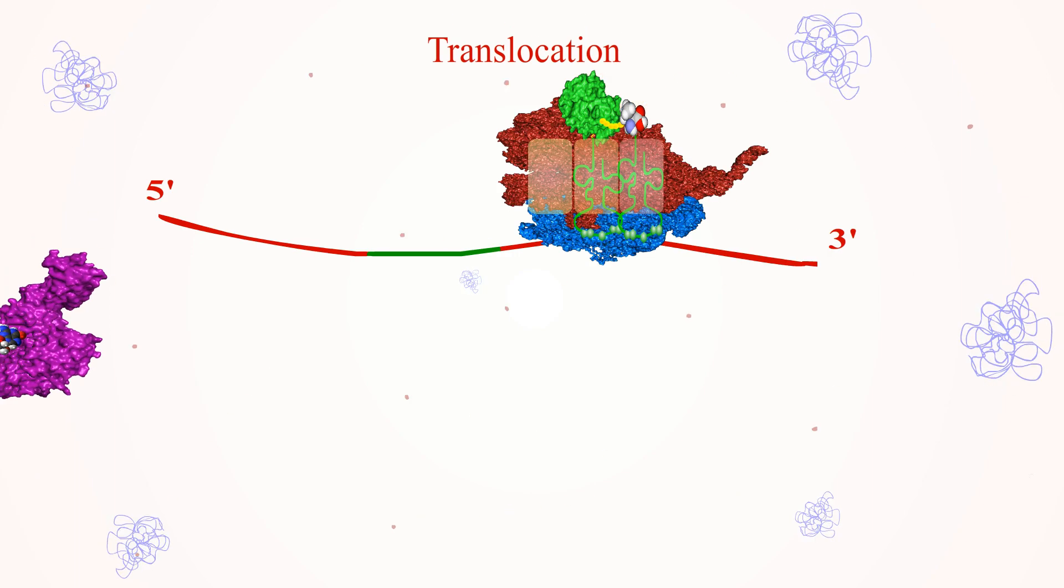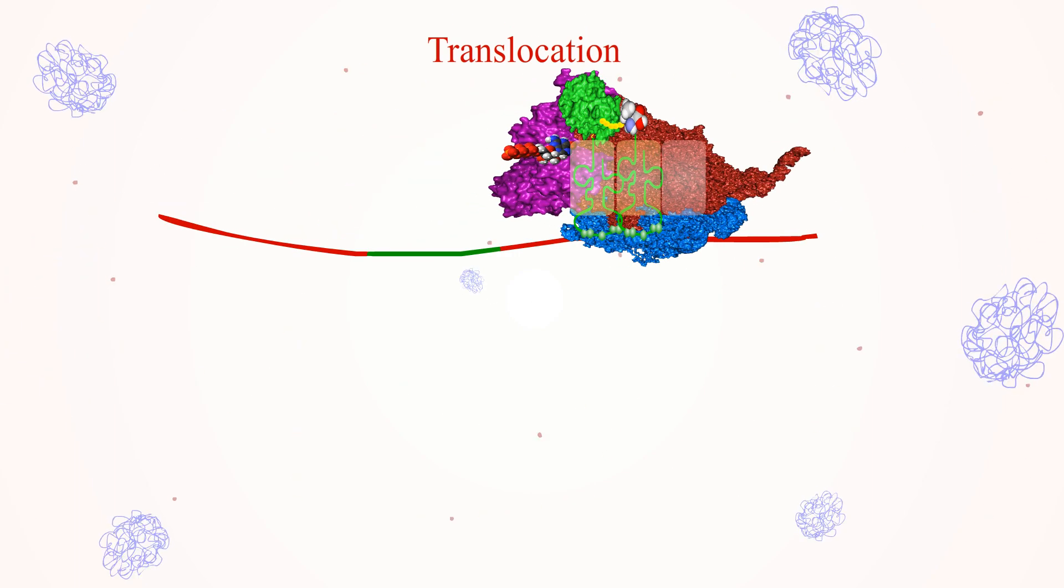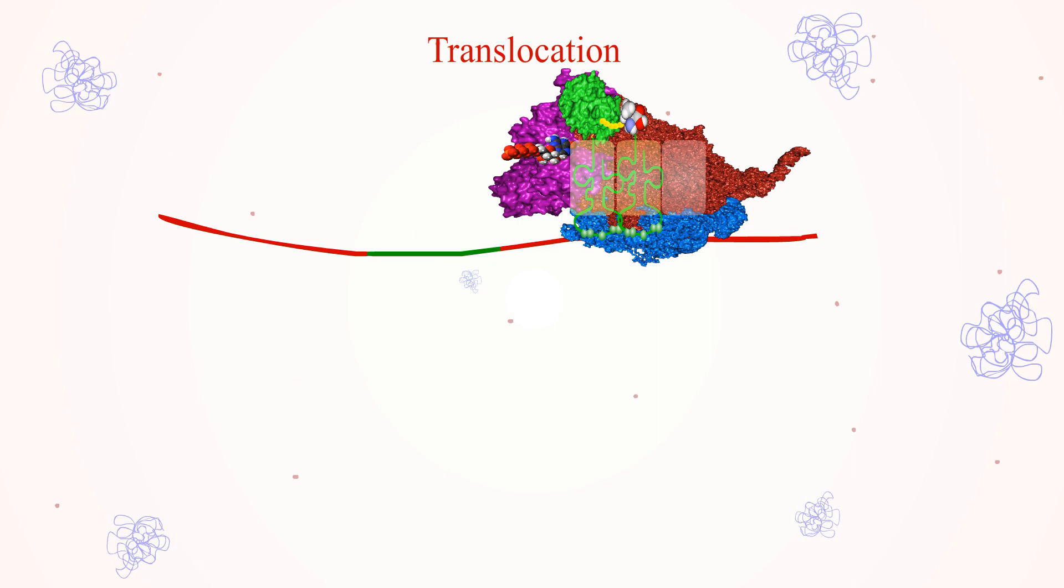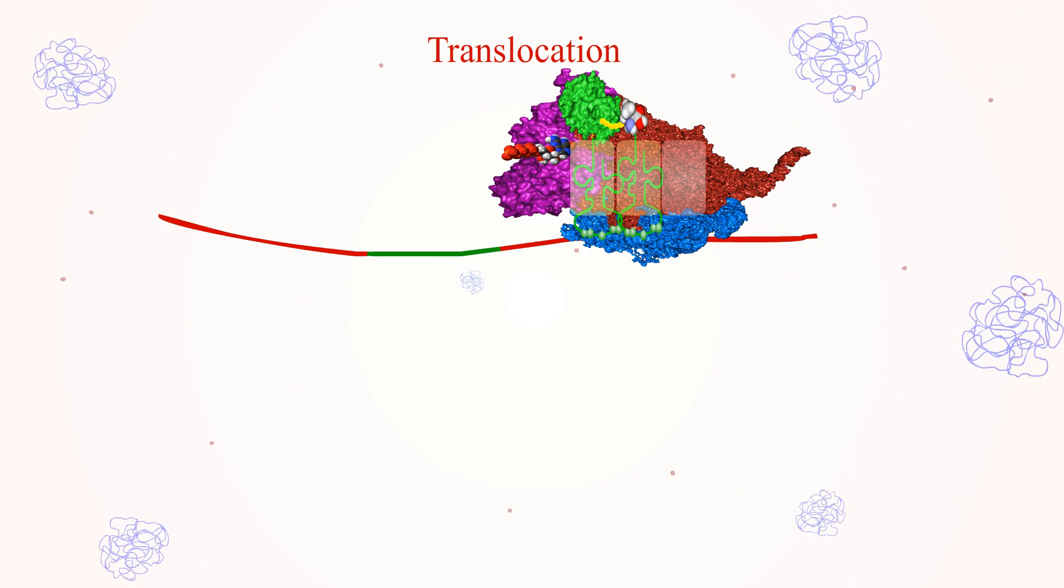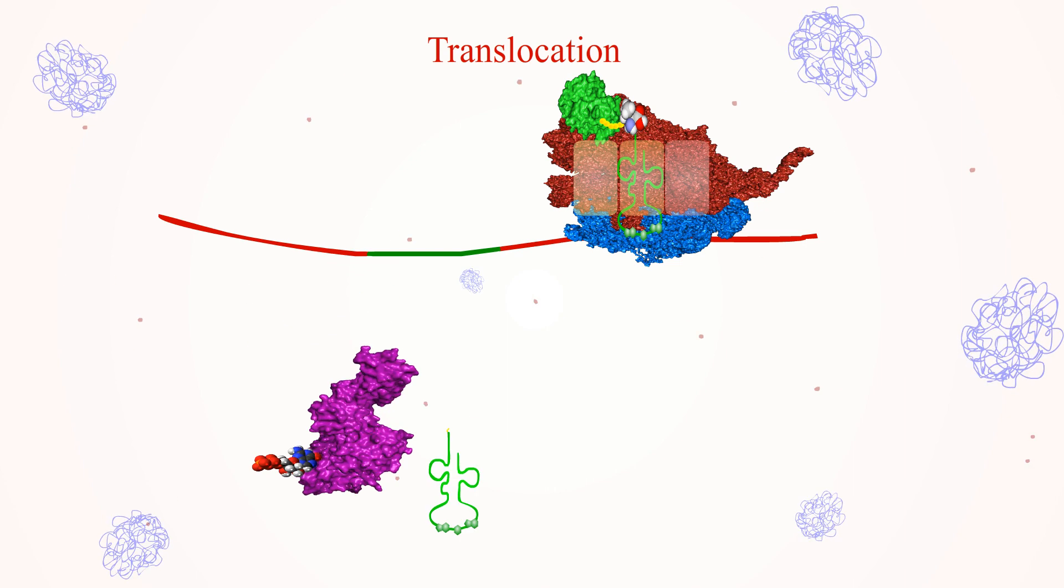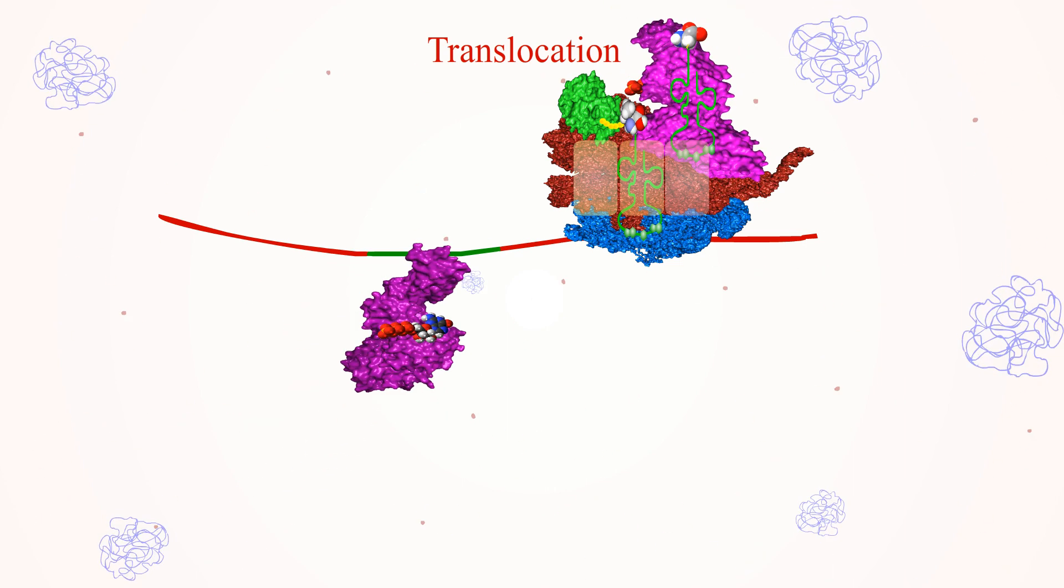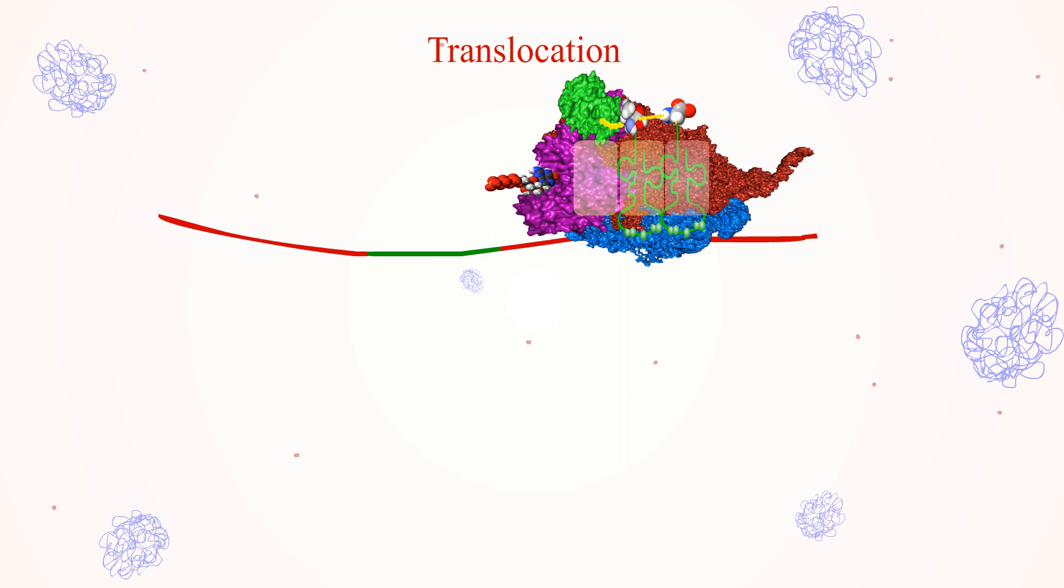Translocation: In the third step of translocation, the elongation factor EF-G, or translocase with GTP, binds to the ribosome. During translocation, the GTP is hydrolyzed to GDP and inorganic phosphate, and EF-G is released to bind more GTP. This makes the A-site empty, ready to accept new aminoacyl-tRNA.